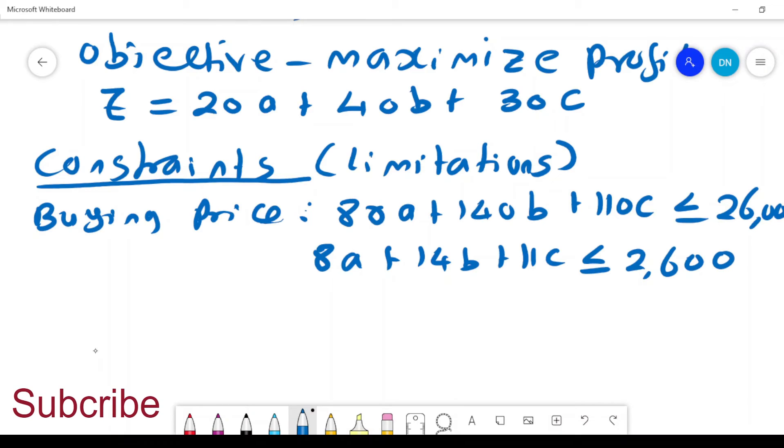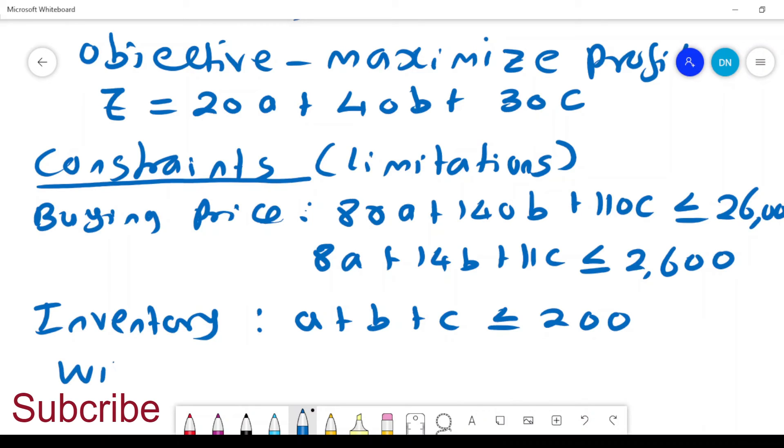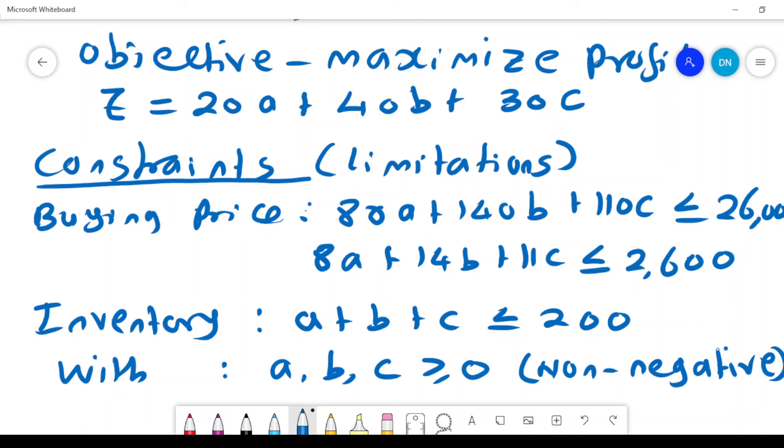Dividing through by 10, we have 8a + 14b + 11c ≤ 2,600. The other limitation is the inventory. If we buy type A plus type B plus type C bicycles, it should not be more than 200 in store. The last thing is that the values of the bicycles should be non-negative. We cannot have a negative bicycle in store, so he has either bought none or a positive number of bicycles.